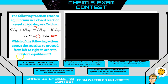Now, there are three things we can do to a system. We can change the pressure by either increasing or decreasing the volume, like in example A. We could change the temperature, like in example D. Or we can add or remove products or reactants, like in B, C, or E. So we're going to have to go over each problem one at a time.